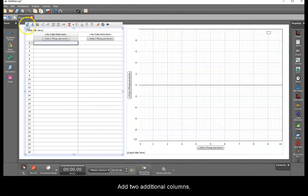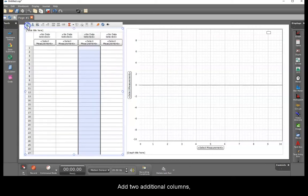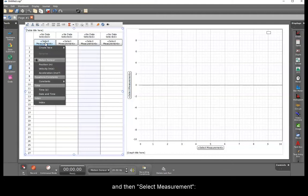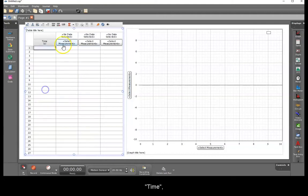Add two additional columns and then select measurement: time, position, velocity, acceleration.